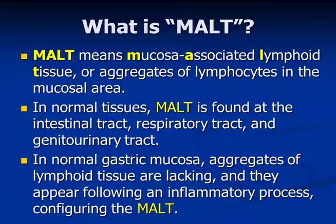What is MALT? MALT means mucosa-associated lymphoid tissue, or aggregates of lymphocytes in the mucosal area. In normal tissues, MALT is found at the intestinal tract, respiratory tract, and genitourinary tract. In normal gastric mucosa, aggregates of lymphoid tissue are lacking and they appear following an inflammatory process, configuring the MALT.